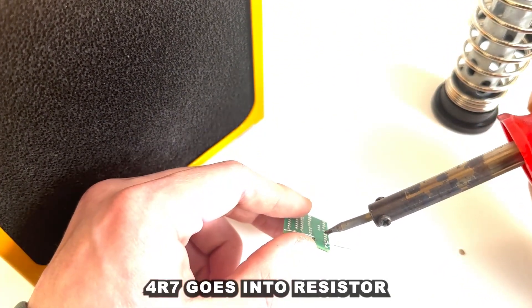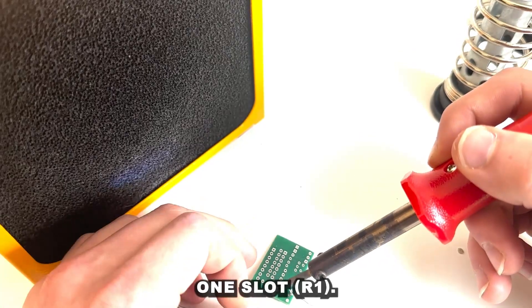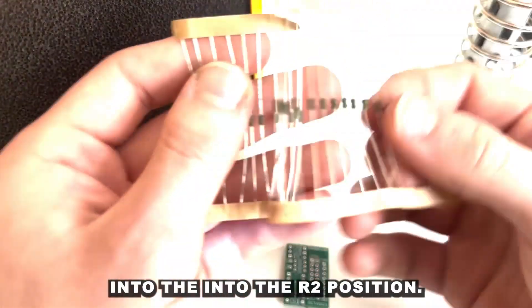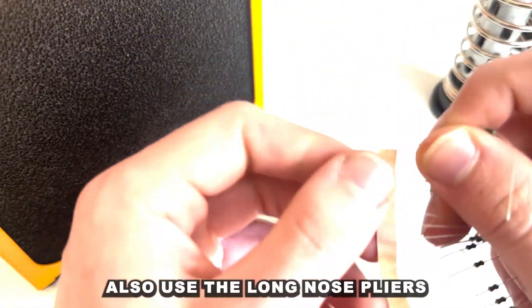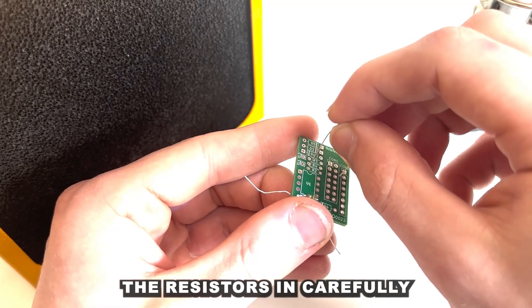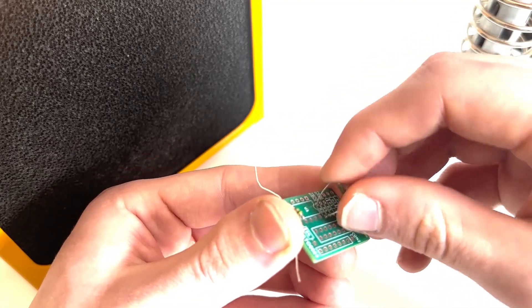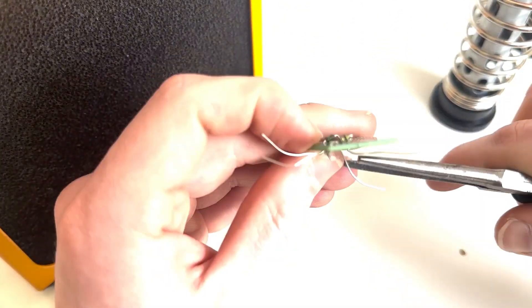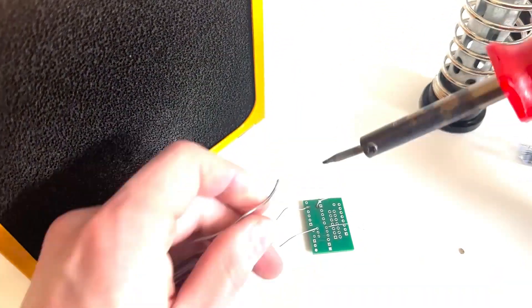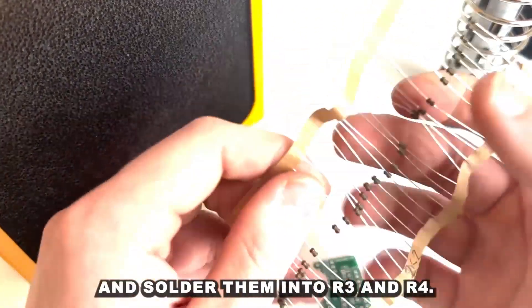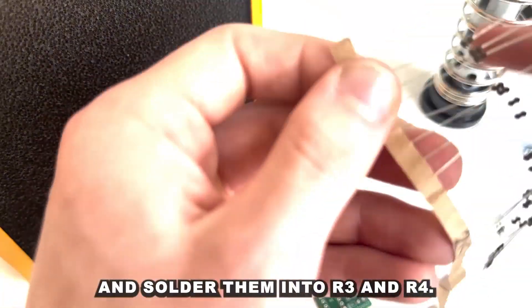Resistor 4R7 goes into resistor 1 slot. Then I'm going to grab a 100 ohm resistor and I'm going to solder that into the R2 position. I also use the long nose pliers to position the resistors in carefully. Then I'm going to grab two 2.2k ohm resistors and solder them into R3 and R4.